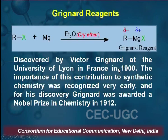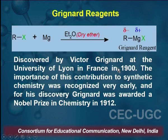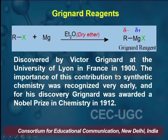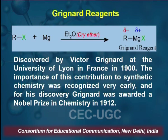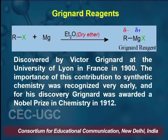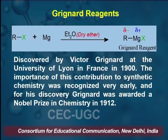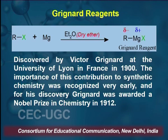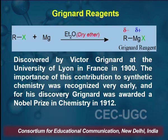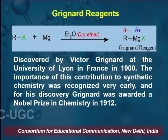Grignard Reagent was basically discovered by Victor Grignard at the University of Lyon, France in 1900. The importance of his contribution to synthetic chemistry was recognized very early, and for his discovery Grignard was awarded the Nobel Prize in 1912.